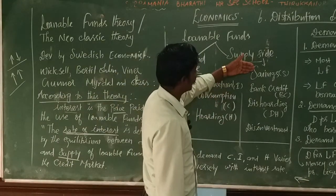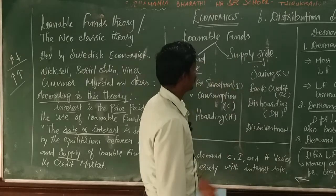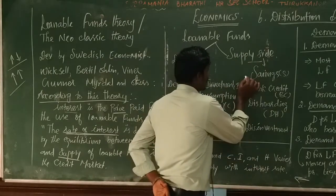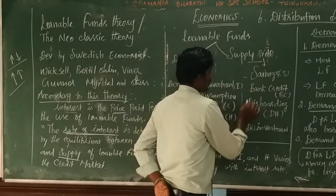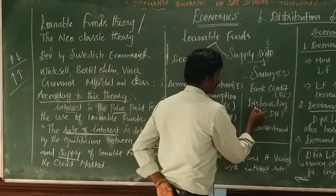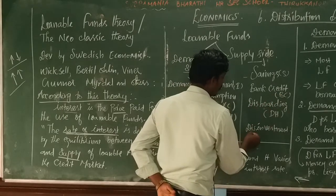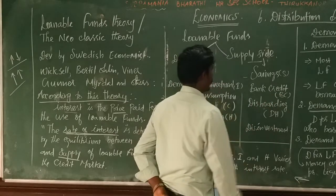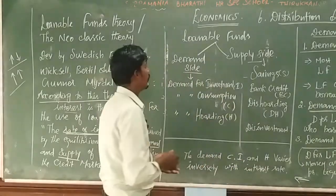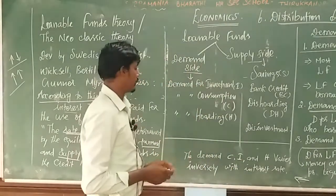On the supply side, there are four categories. The first one is savings, the second one is bank credit, the third one is dishoarding, and the fourth one is disinvestment. These are classified into the demand side and supply side.